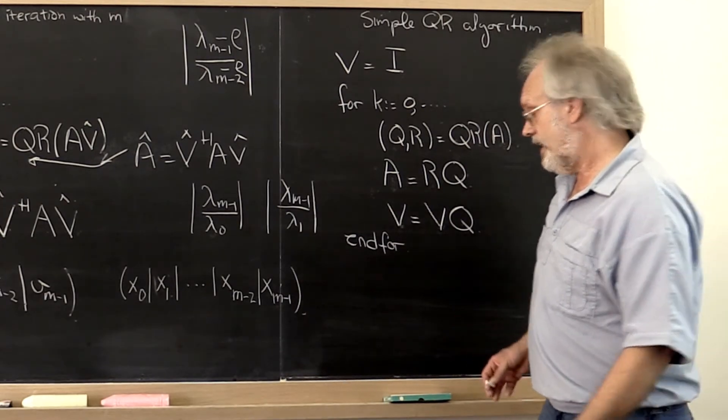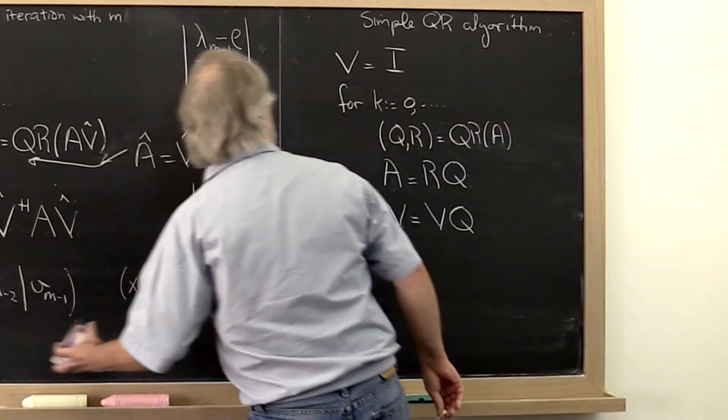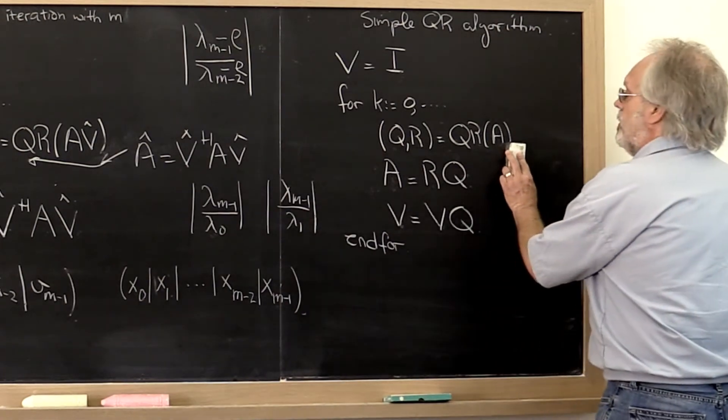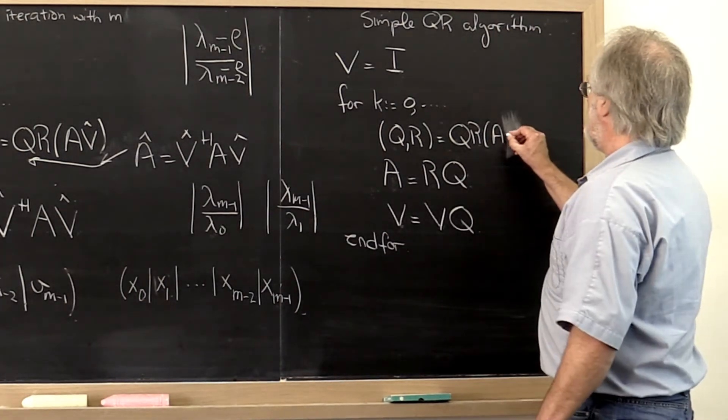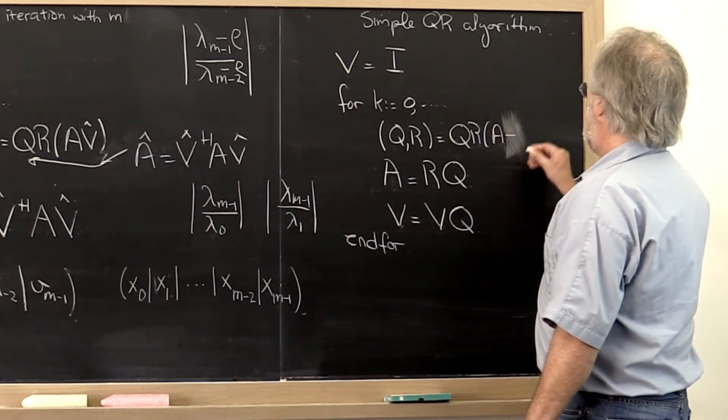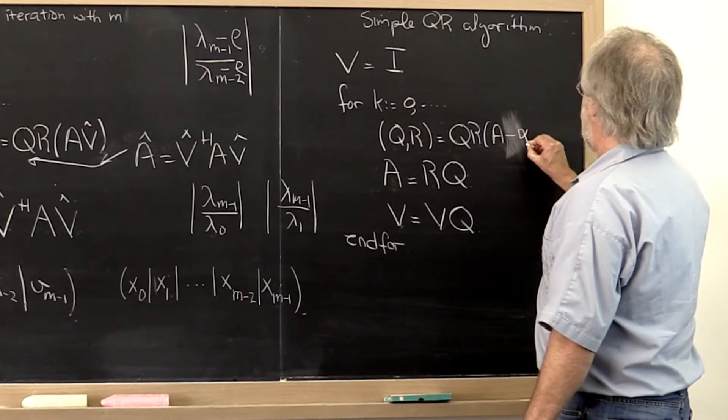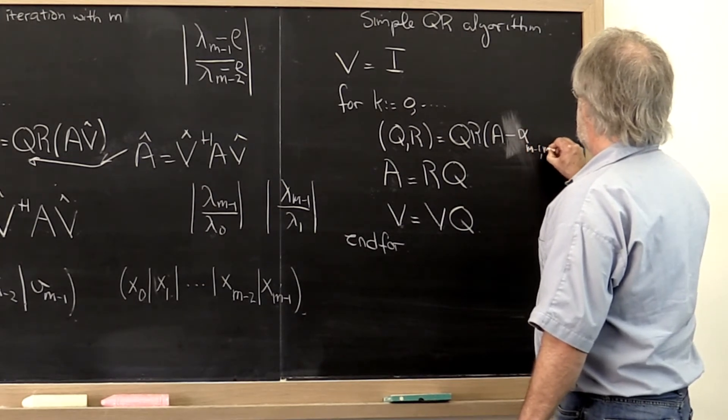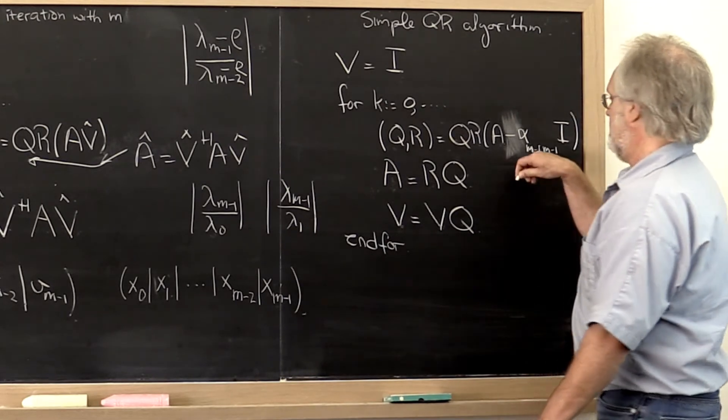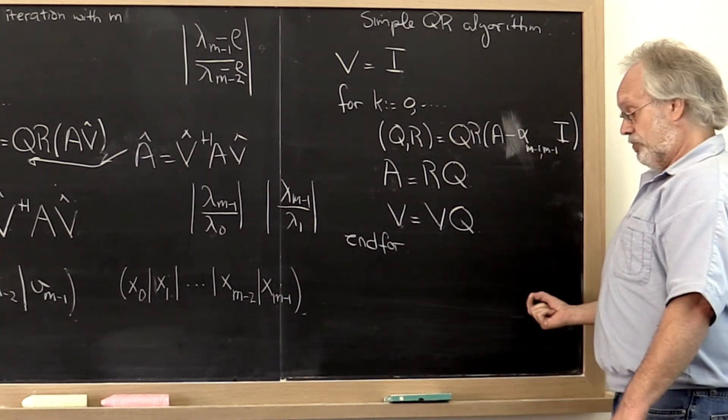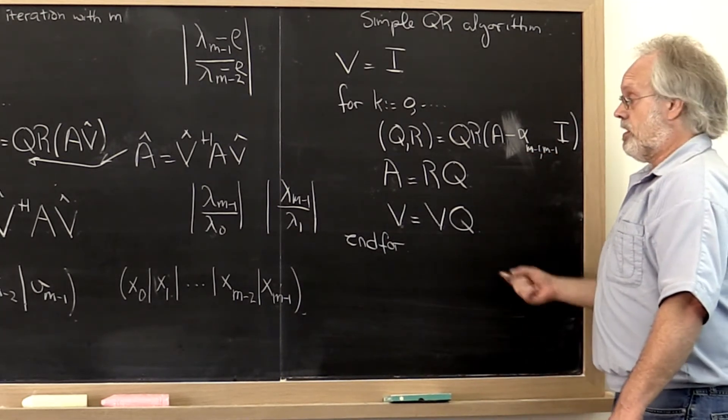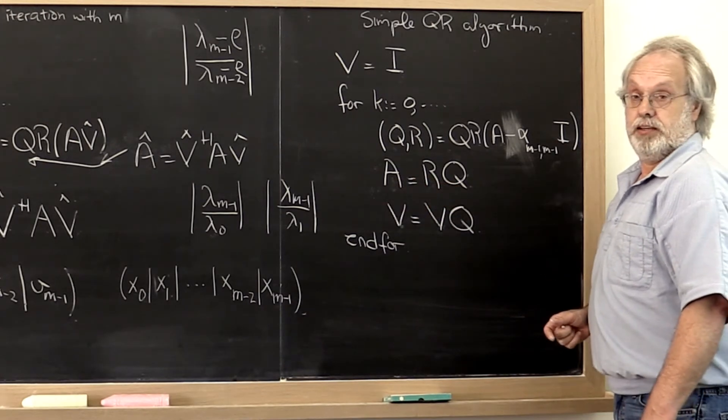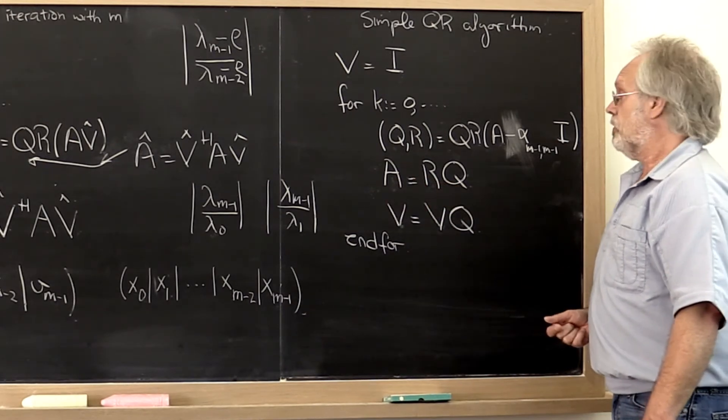So what do we get then? We get an algorithm where we say compute the QR factorization of A minus alpha m-1 times the identity. This is the entry in the lower right-hand corner of our matrix A that's converging to lambda m-1.